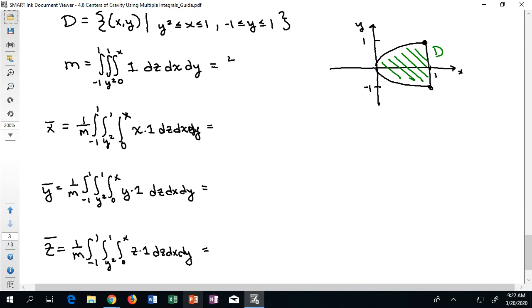Okay, so my answers are going to look like I got four-fifths for the mass, I got five-sevenths for the x-bar, zero for the y-bar, and five-fourteenths for the z-bar. So the center of mass of the solid is (5/7, 0, 5/14).